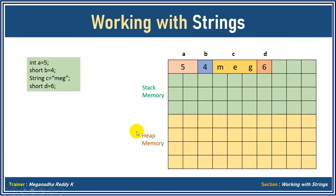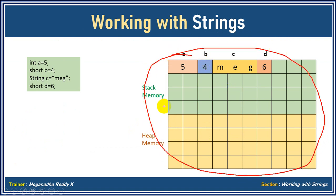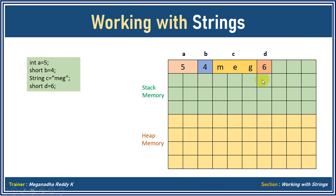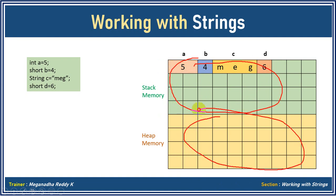Now let's take this as your computer memory. Normally computer memory is categorized into two types: one is stack memory and one is heap memory. Heap memory is a huge memory. Stack memory will be limited, like maybe 40 MB, 50 MB, 100 MB, or 200 MB — that depends on processor to processor and application to application. Let's assume this is the stack memory and this is the heap memory, which is huge.